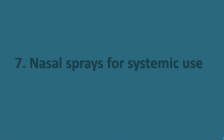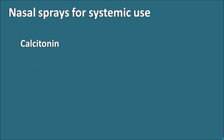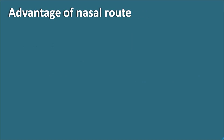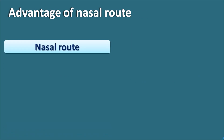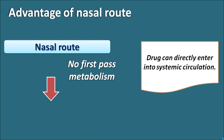The seventh category is nasal sprays for systemic use. Until now we discussed drugs given nasally to produce local effects, but some drugs are intended for systemic use. Calcitonin, used to treat osteoporosis, is given as a nasal spray for systemic purposes. The nasal route allows the drug to enter systemic circulation directly, avoiding first-pass metabolism and increasing the bioavailability of calcitonin, which is a peptide.